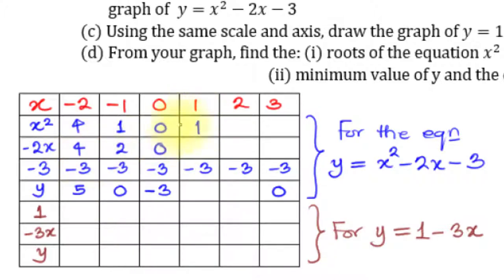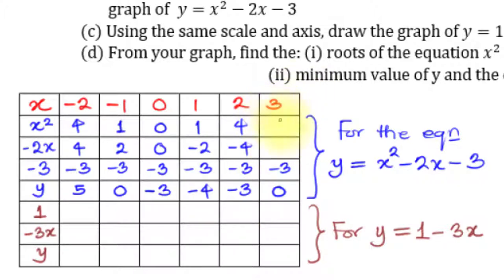When x = 1: x² = 1, -2x = -2, so 1 - 2 - 3 = -4. When x = 2: x² = 4, -2x = -4, so 4 - 4 - 3 = -3. When x = 3: x² = 9, -2x = -6, so 9 - 6 - 3 = 0. These are consistent with the given values of -3 and 0, confirming all computed values are correct.